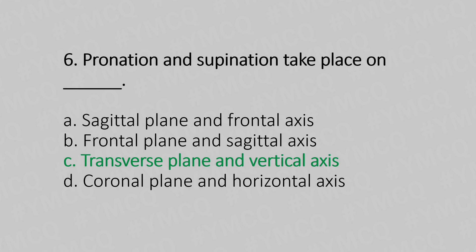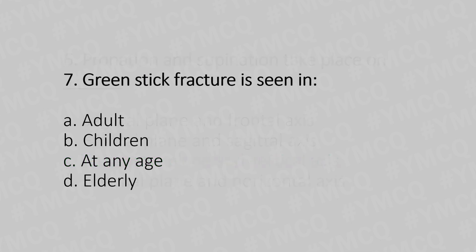Seventh question: Greenstick fracture is seen in — Option A: adults. Option B: children. Option C: at any age. Option D: elderly. The answer is Option B, children.